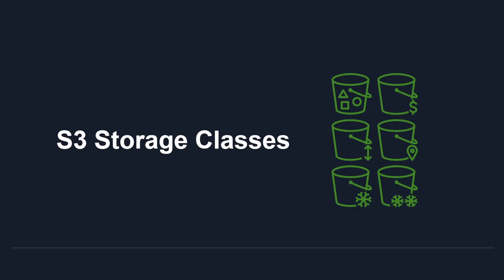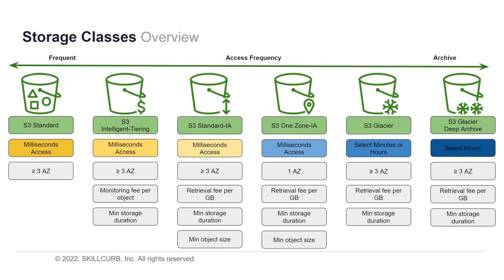S3 Storage Classes. What are storage classes in Amazon S3? These are different classes of storage you can use depending on how frequently you want to access your data. If you want to access your data a lot, S3 Standard works perfectly. If you don't want to access your data frequently and plan to have an archive, S3 Glacier or S3 Glacier Deep Archive are better options. Depending on your frequency and other factors, you can decide which storage class is best for you.